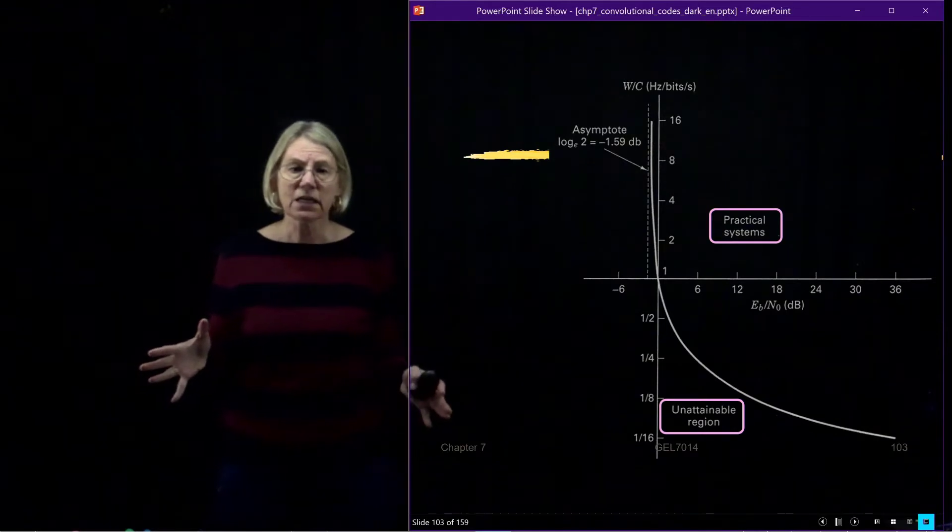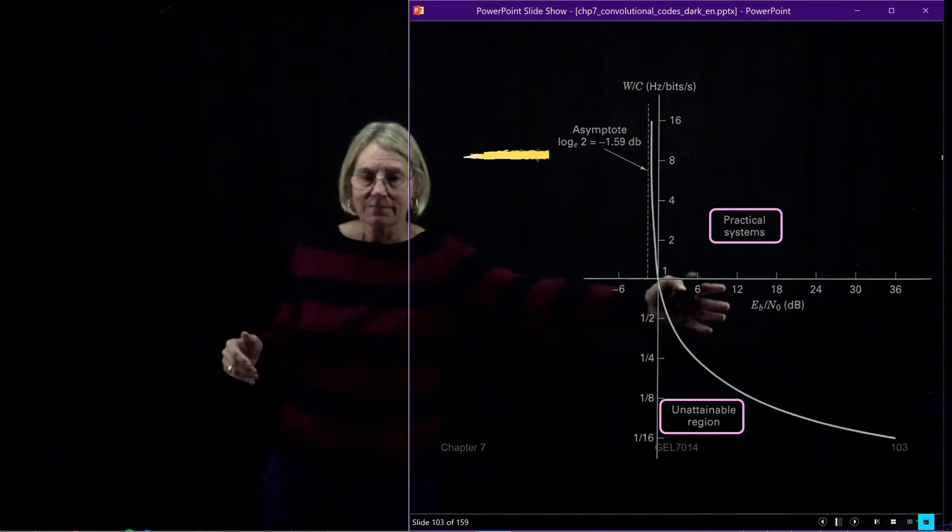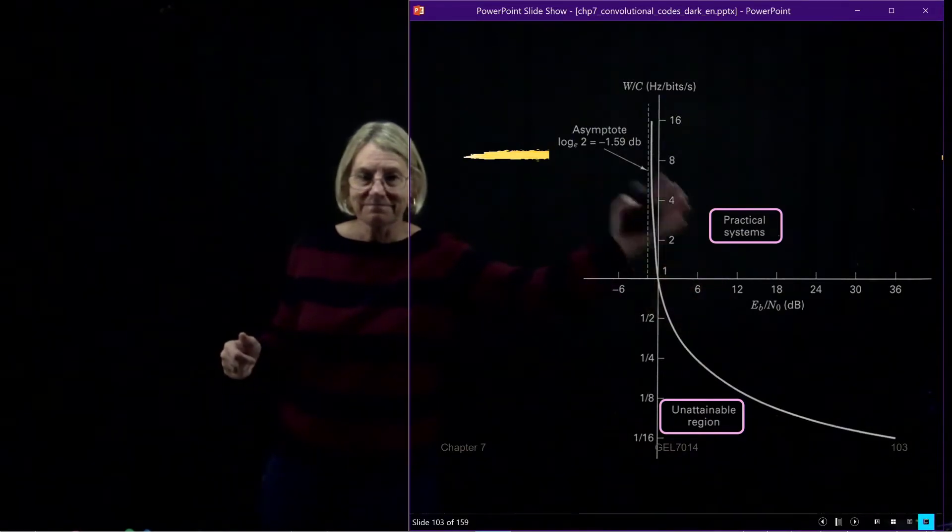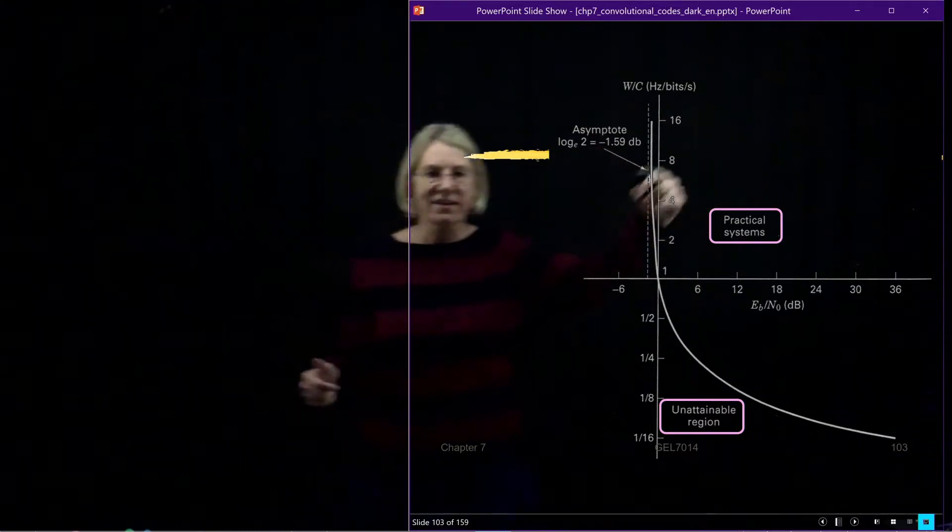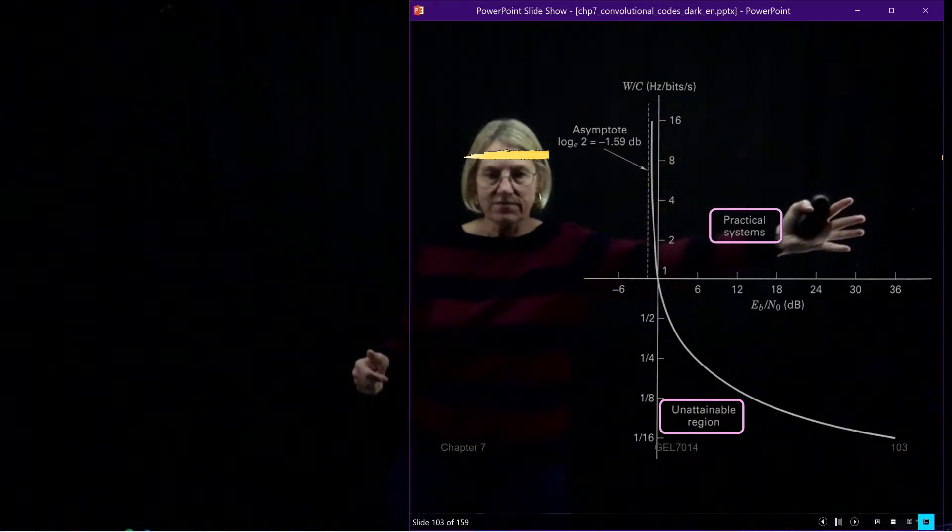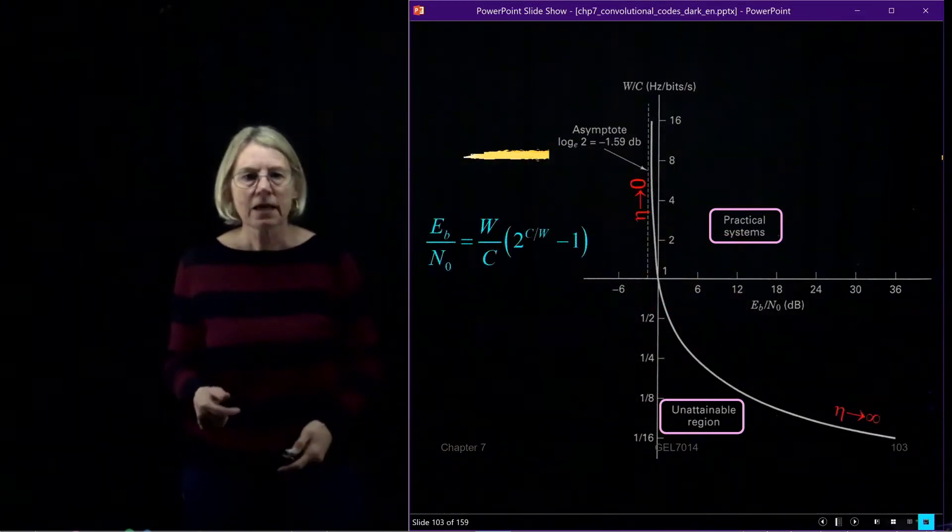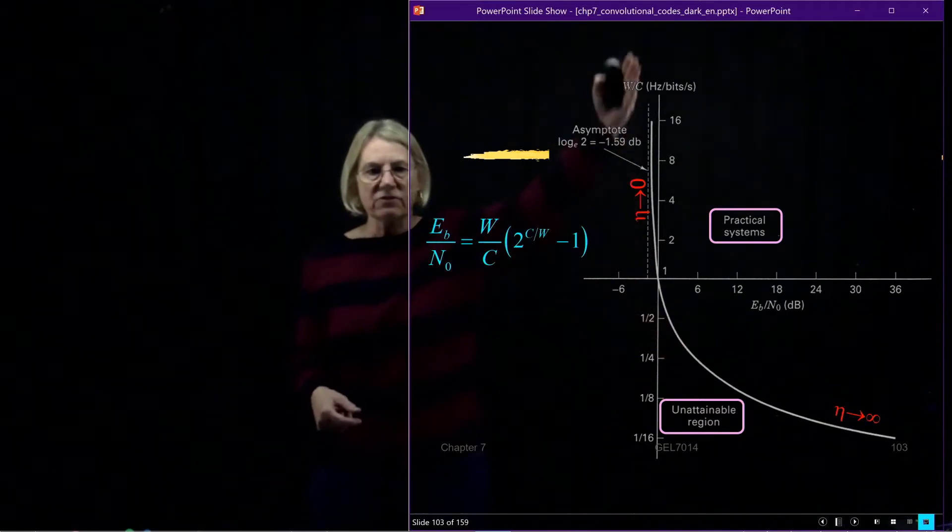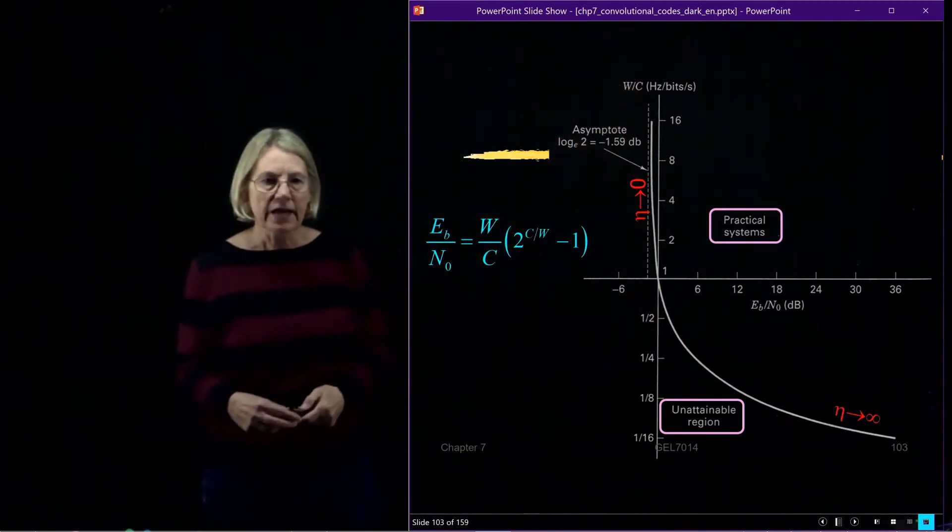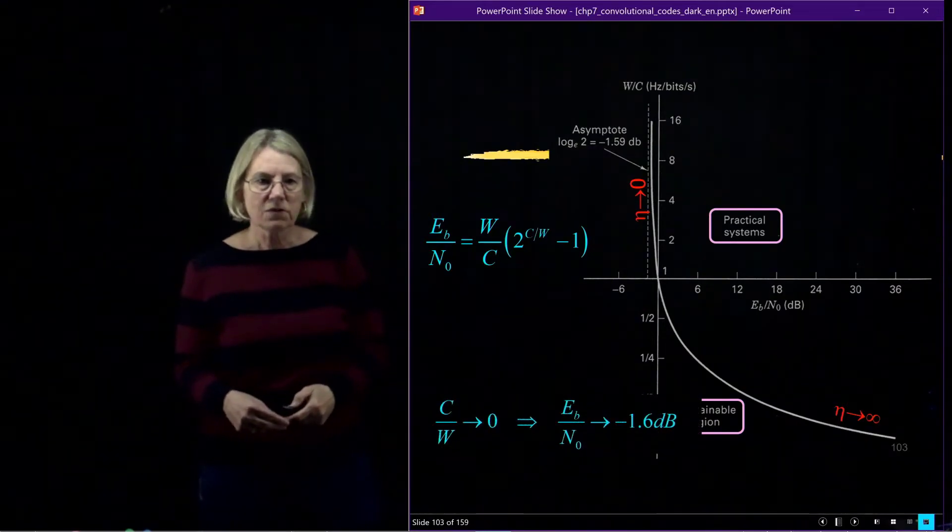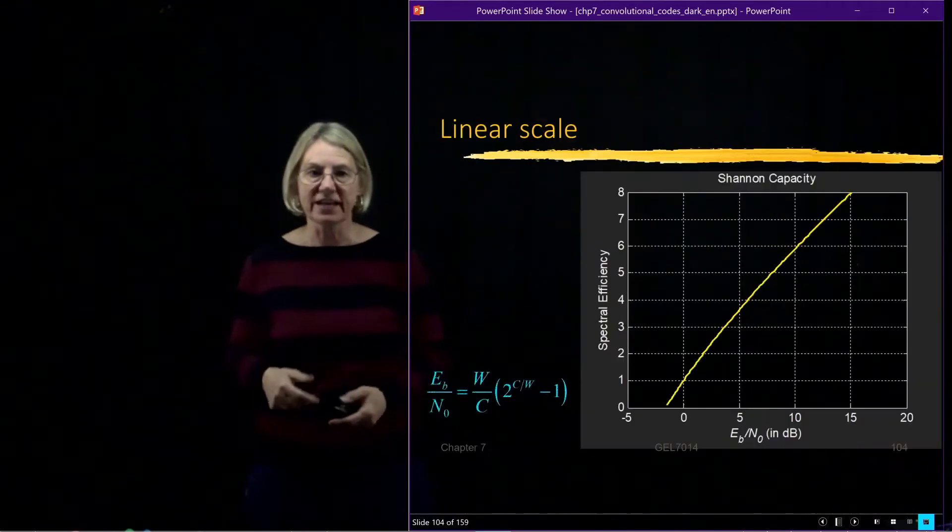We divided the SNR bandwidth efficiency plane into two sections, the practical side of the Shannon limit, which is the curve there, and the unattainable region on the other side of the limit. Going to spectral efficiency of zero, we got this asymptote at minus 1.59, and here I'd like to show you one of the codes that could indeed approach this Shannon capacity.